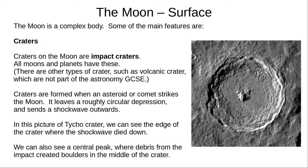There are lots of interesting features to look at on the Moon. You can see some with the naked eye, but for others you need a telescope or binoculars. We can see several craters with the naked eye, and more with the telescope. Craters can be formed in many ways, such as volcanoes, but almost all craters on the Moon are impact craters, formed when an asteroid or comet hits the Moon.